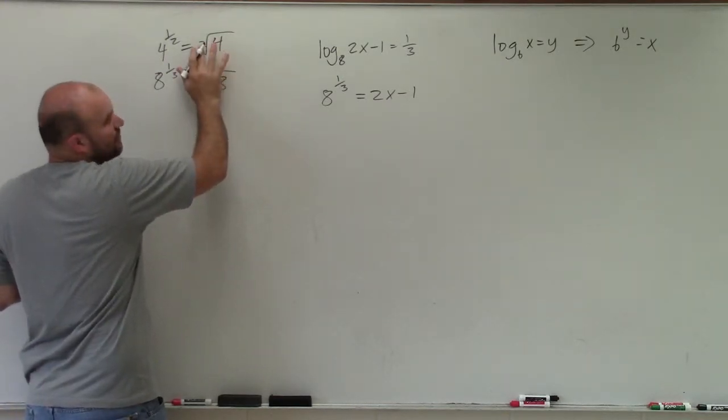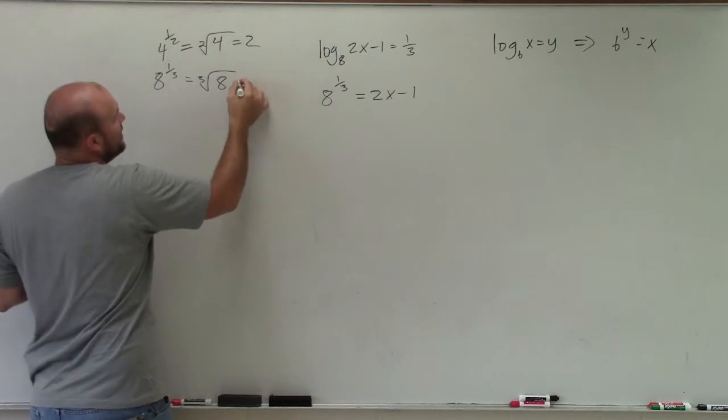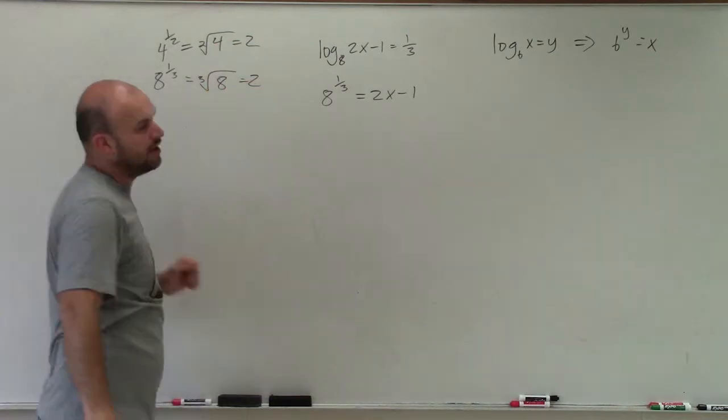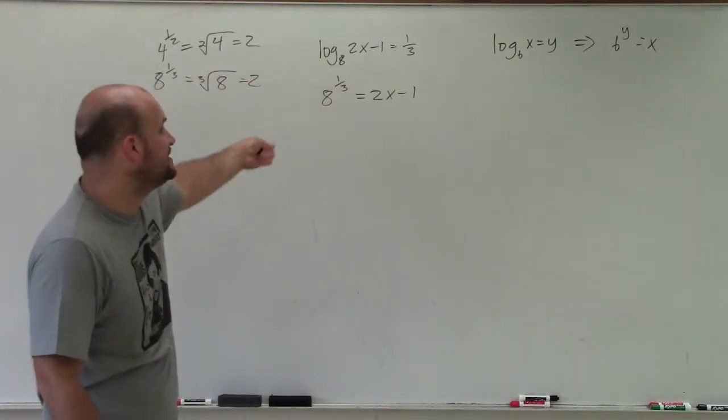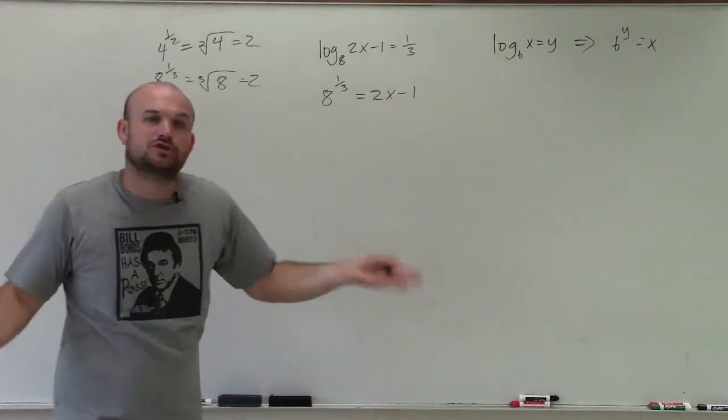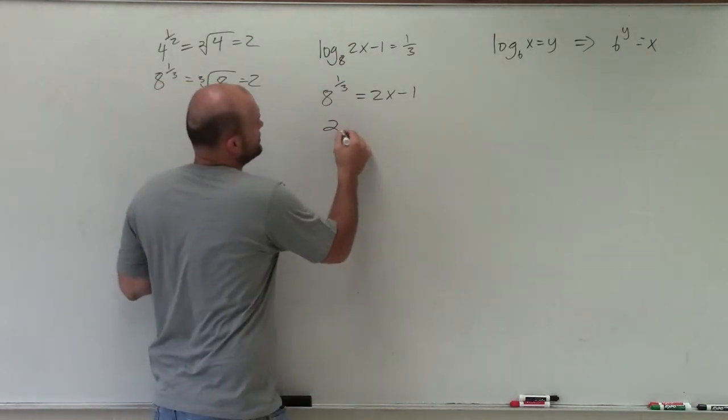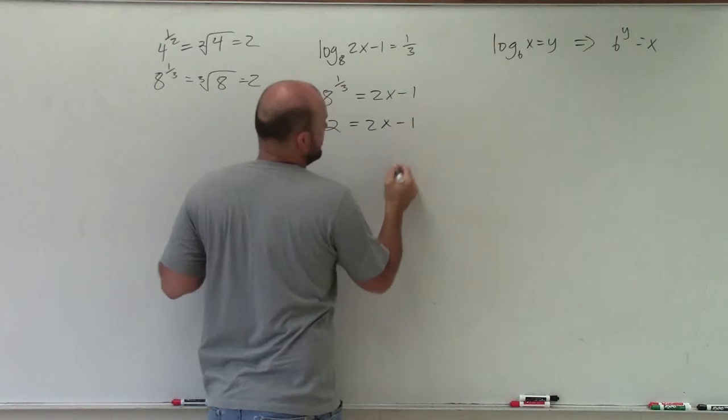For the square root, we usually don't write the 2, but we know that's 2. The cube root of 8 is also 2. So 8 to the 1/3 is the cube root of 8, which is 2, equals 2x minus 1.